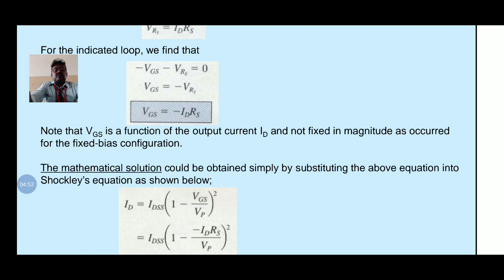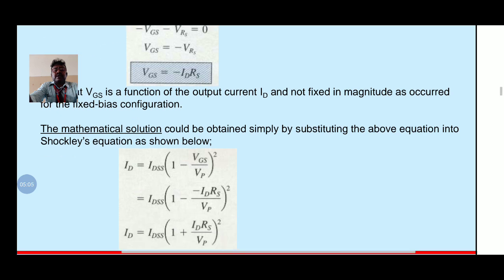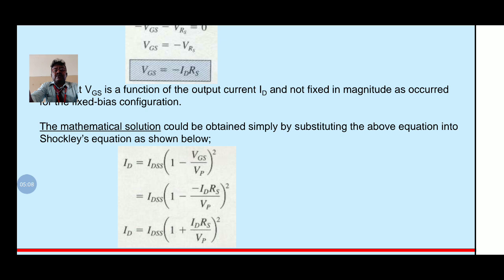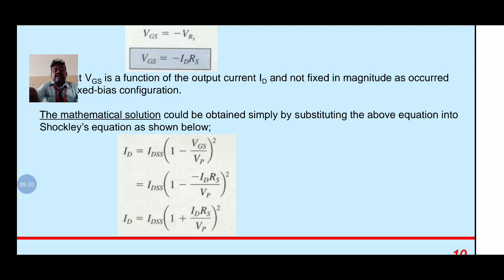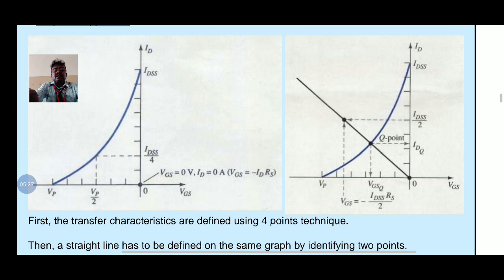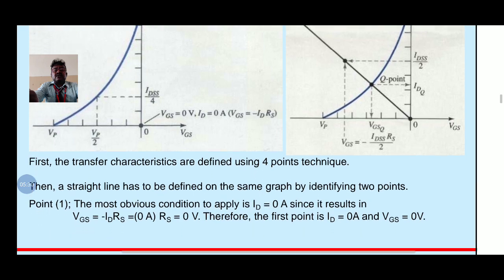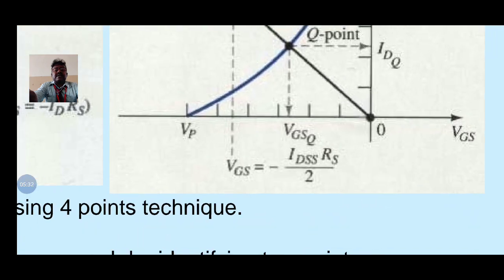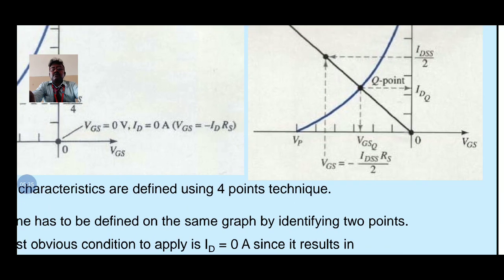The mathematical solution can be obtained by substituting the above equation into Shockley's equation: ID equal to IDSS into 1 minus VGS divided by VP, the whole square. Substituting VGS equal to minus ID into RS gives ID equal to IDSS into 1 plus ID into RS divided by VP, the whole square. First, the transfer characteristics are defined using three points, then a straight line is drawn on the same graph to identify two points.